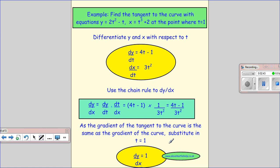Now as the gradient to the tangent is the same as the gradient to the curve, all we now need to do is substitute our point in. So our point was at t equals 1 to get the gradient to the tangent. So I just put 1 in here, so I get 4 times 1 minus 1. So that's 4 minus 1 is 3, times 3 times 1 squared. So that's 3 over 3 just gives you 1.